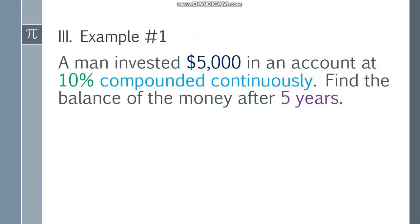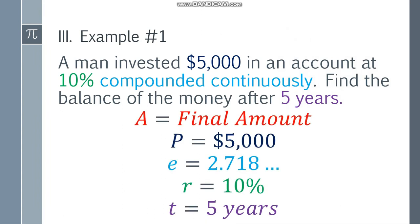So let's have the first example. A man invested $5,000 in an account at 10% compounded continuously. Find the balance of the money after 5 years. To find the final amount, let's list our given values. A will be the final amount. P will be $5,000, that's the principal, the initial investment. E is 2.718 something. R will be 10%, that's the rate. And t will be 5 years.